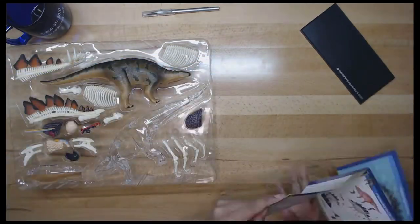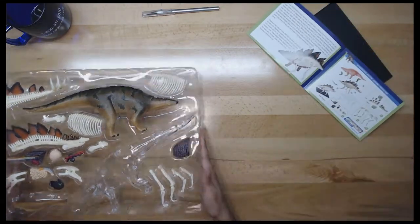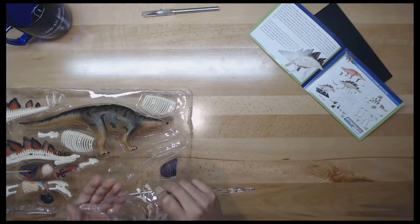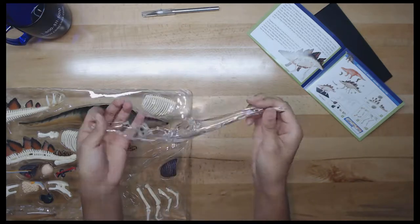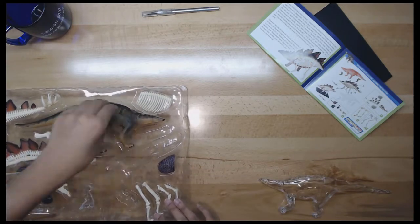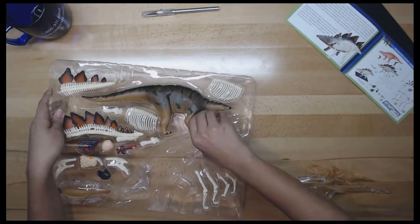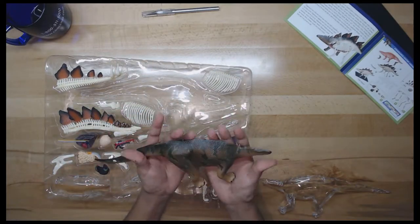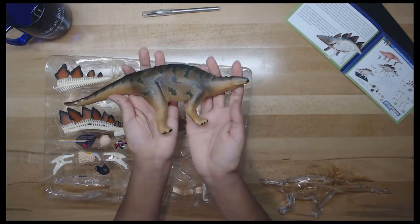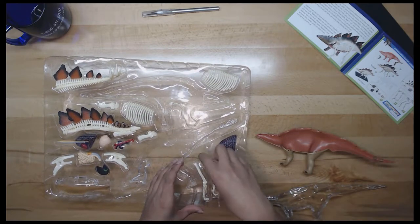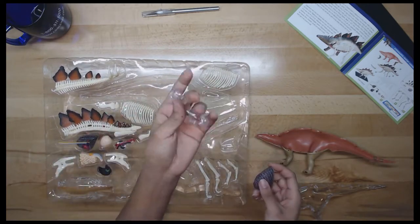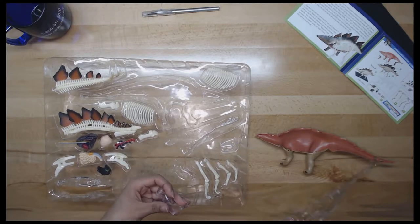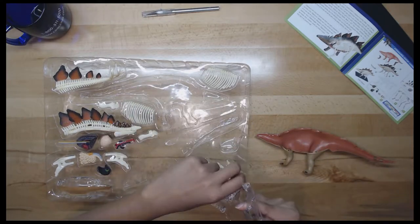Though there were closely related dinosaur species living in other parts of the world including Africa, China, Mongolia, and Europe. Stegosaurus was originally named by Othniel Charles Marsh in 1877 from remains recovered north of Morrison, Colorado averaging around 9 meters or 30 feet long and 4 meters or 14 feet tall.